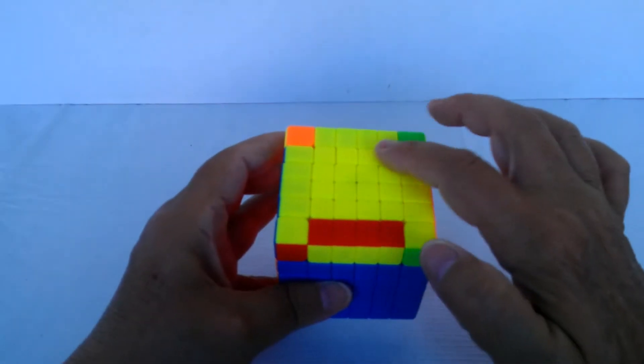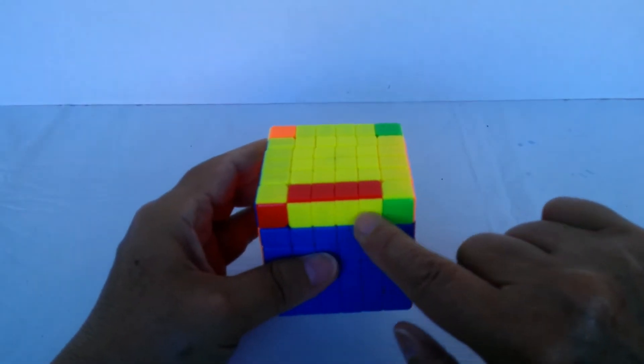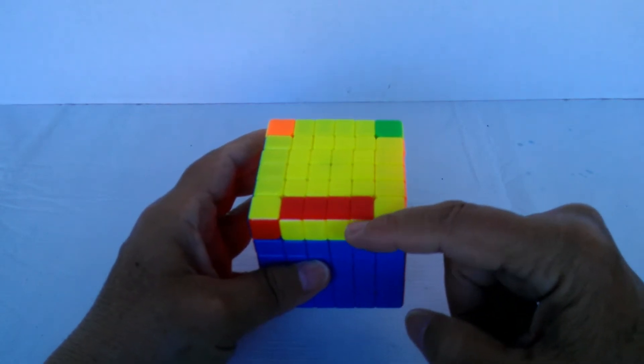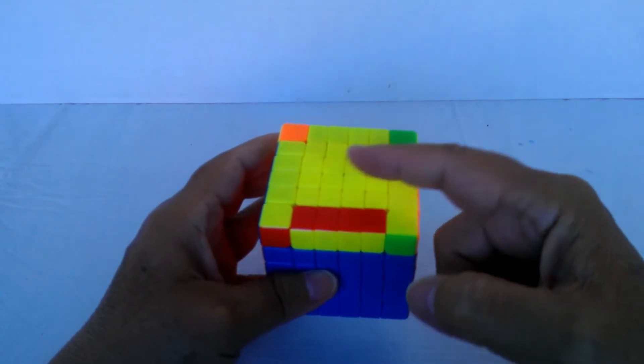And no matter what other algorithms I'm used to doing, I can't get these yellow on top. So I need to do the flip algorithm that reorients this.